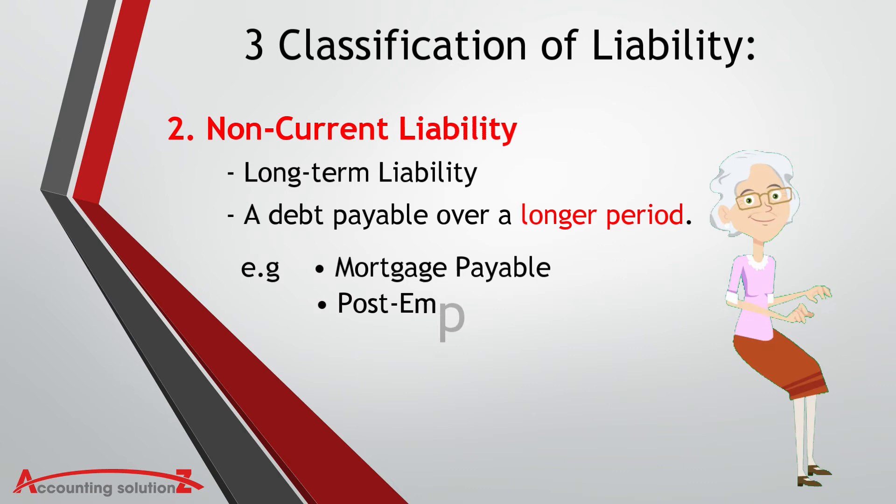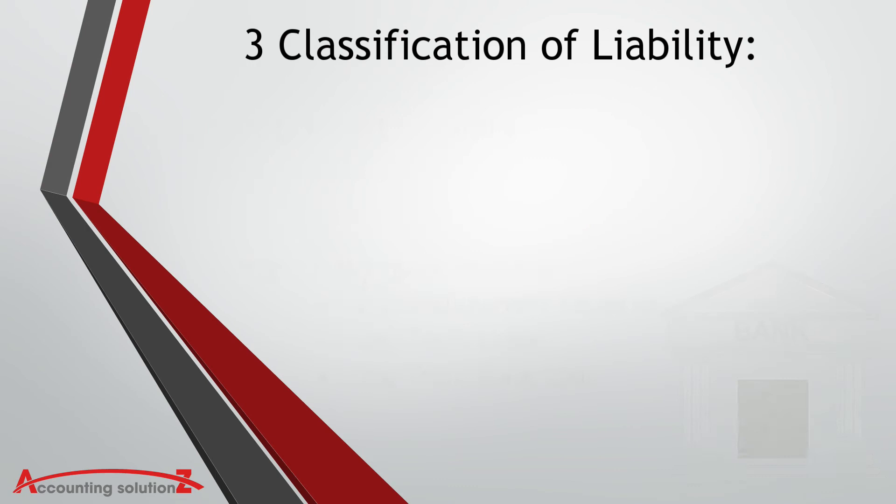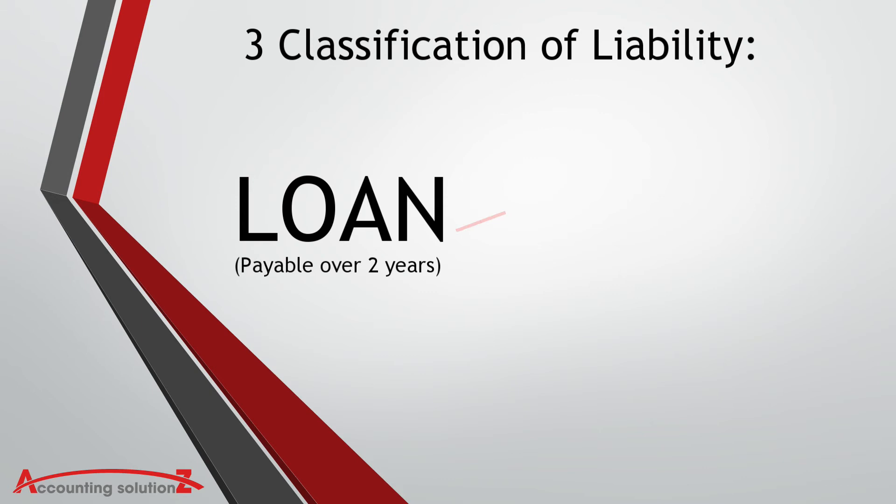Take note that some items can be classified in both categories, such as a loan that is to be paid back over two years. The money owed for the first year becomes a current liability, and the rest of the balance owing becomes a long-term liability.